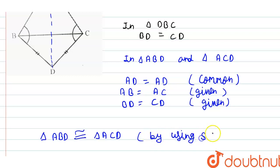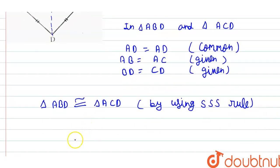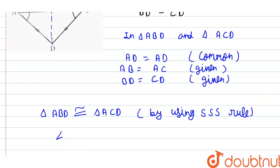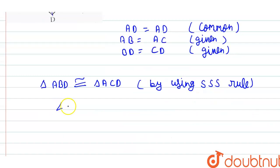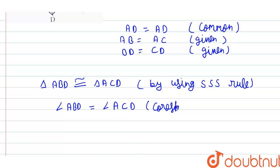By using the SSS (side-side-side) rule. So from here we can say that angle ABD is equal to angle ACD, because this is the corresponding part of congruent triangles (CPCT).